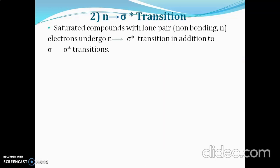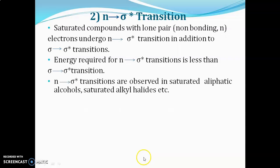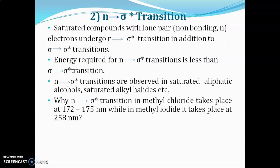Saturated compounds with lone pairs of electrons or heteroatoms show the n to sigma anti-bonding transition along with sigma to sigma anti-bonding transition. The energy required is less than sigma to sigma transition. N to sigma transitions are observed in saturated aliphatic alcohols and saturated alkyl halides. For example, n to sigma transition in methyl fluoride occurs at 170–175 nm while in methyl iodide it occurs at 258 nm.